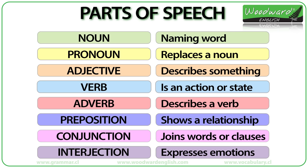Each part of speech has a specific use or function. In general, a noun is a naming word — the name of something. A pronoun replaces a noun. An adjective describes something. A verb is an action or a state of being. An adverb normally describes a verb or sometimes gives more information about an adjective. A preposition shows a relationship or connection between things. A conjunction is a joining word that connects two parts of a sentence. An interjection expresses a strong feeling or emotion.